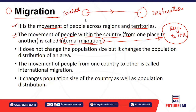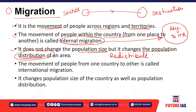Internal migration, on the national scale, does not change the total population of the country because the population is simply redistributed from one place to another. There is a change in population distribution, since the population is redistributed from the source region to the destination region, but the overall absolute number of the population will not change at the all-India level.